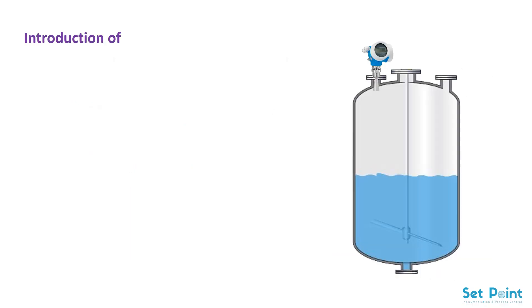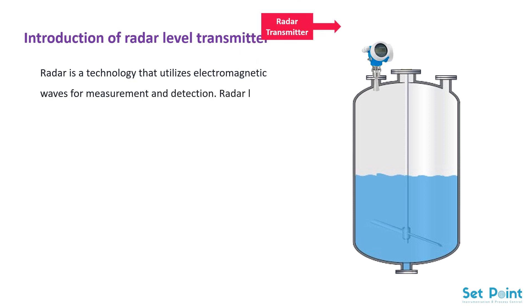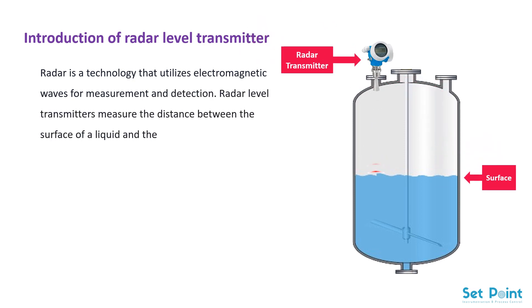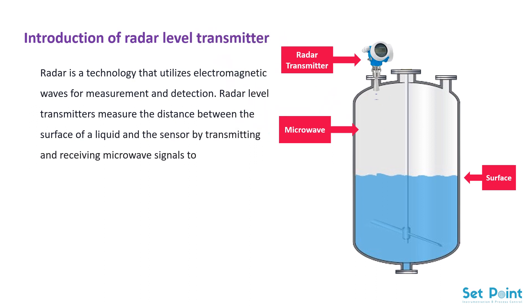Introduction of radar level transmitter. Radar is a technology that utilizes electromagnetic waves for measurement and detection. Radar level transmitters measure the distance between the surface of a liquid and the sensor by transmitting and receiving microwave signals to determine the level of the liquid.